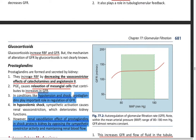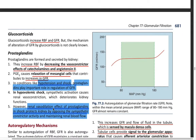Prostaglandins increase RBF by decreasing the vasoconstrictive effect of catecholamines and angiotensin II. PGE2 also causes relaxation of the mesangial cells, contributing to an increase in GFR. In hypotension and shock conditions, prostaglandins play an important role in regulation of GFR — they cause renal vasodilation, opposing sympathetic constrictor activity and maintaining renal blood flow even during shock.